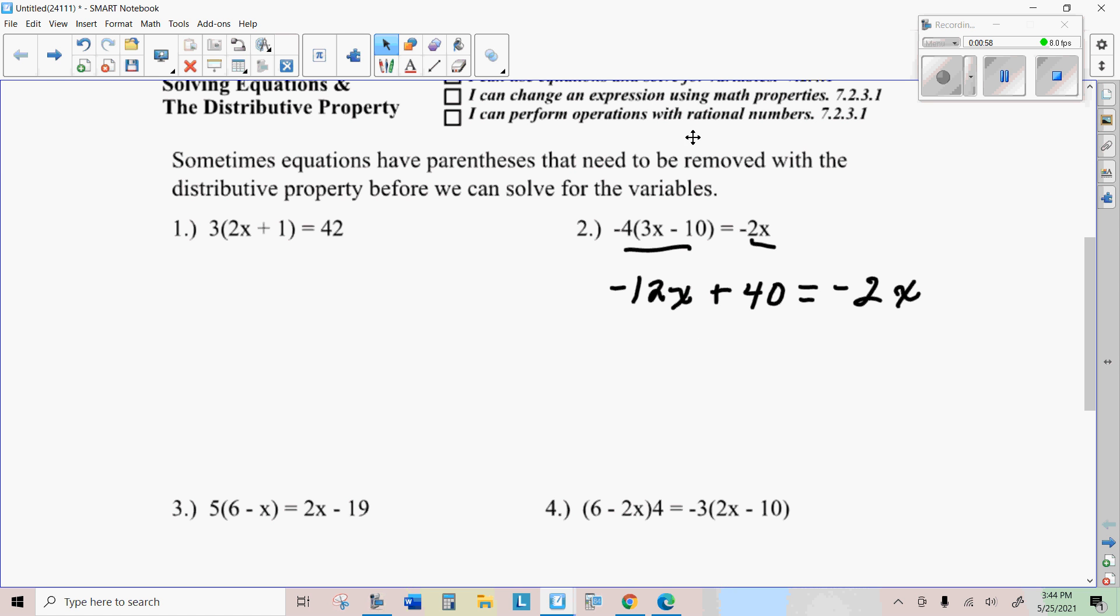so you get negative 12X plus 40 equals negative 2X. Okay, then you're going to continue by adding, I think adding 12X, get rid of this negative 12X over here, is a better way to go.